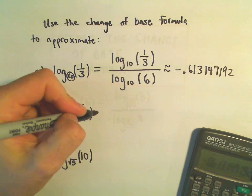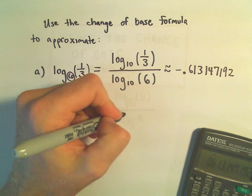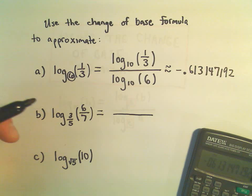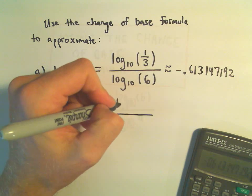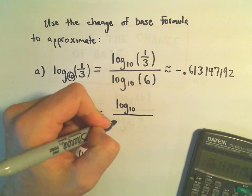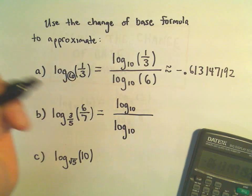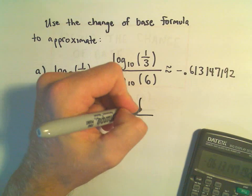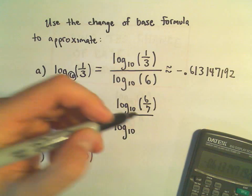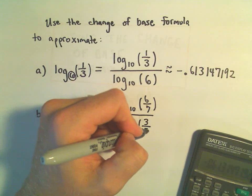The same thing in our next example. I've got log base 3/5 of 6/7. So I'm going to use log base 10. Our 6/7 goes in the numerator. Our 3/5 goes in the denominator.